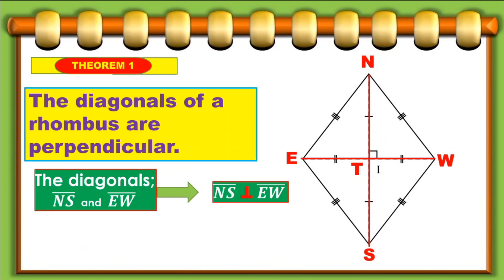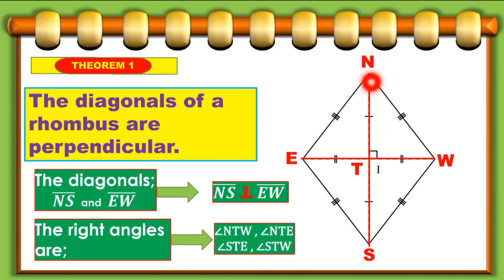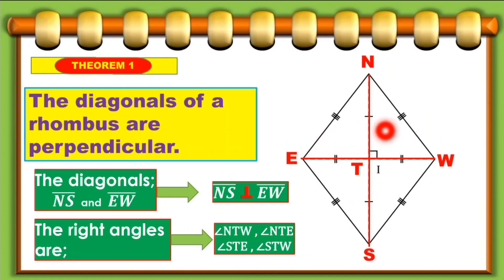Since the diagonals are perpendicular, we can form right angles at their intersection. We used T as the point of intersection. So we have angle NTW, angle NTE, angle STE, and angle STW — all right angles formed at point T.